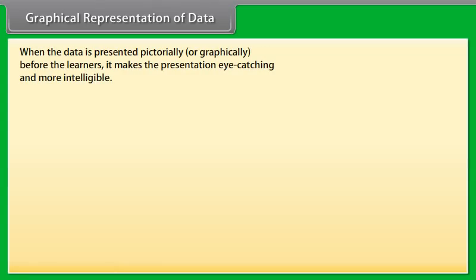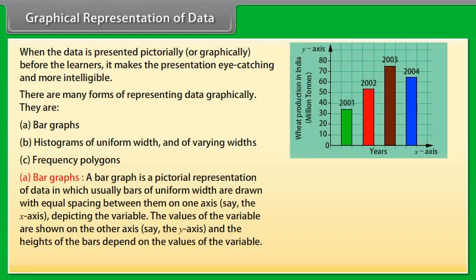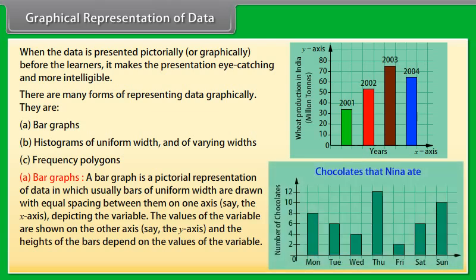Graphical representation of data: When data is presented pictorially or graphically it makes the presentation eye-catching and more intelligible. There are many forms: bar graph, histograms of uniform width and of varying widths, and frequency polygons. A bar graph is a pictorial representation of data in which bars of uniform width are drawn with equal spacing on one axis depicting the variable. Observe this bar graph representing the number of chocolates that Nina ate last week. We can see that on Thursday she ate the most number of chocolates.